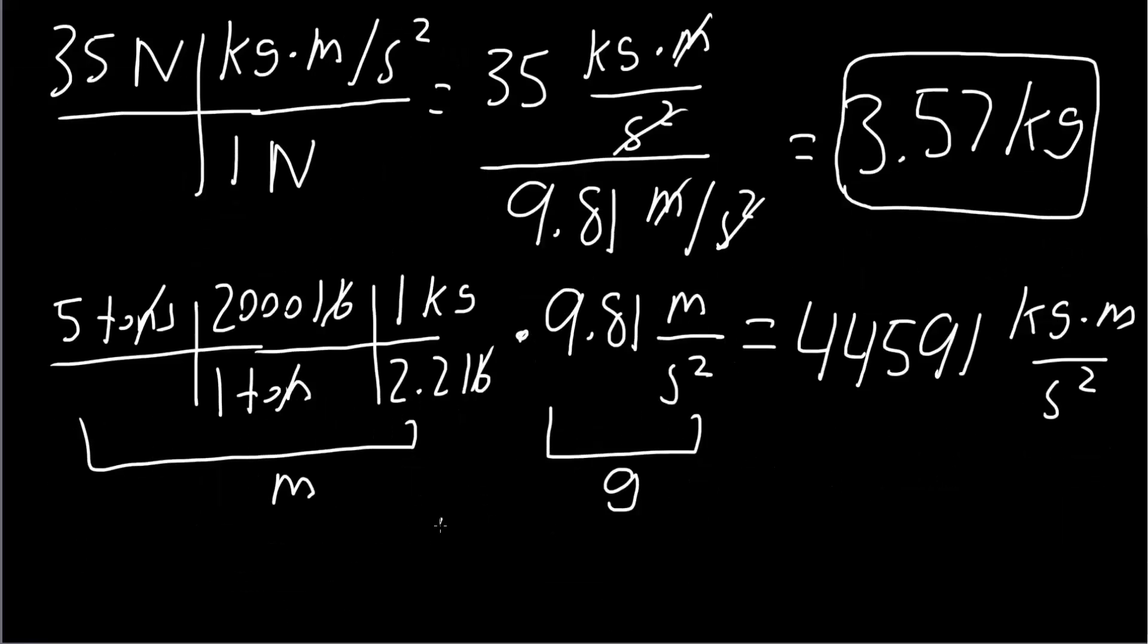So we can say 44,591 kilograms times meter divided by seconds squared. And based on the relationship, we know that 1 kilogram times meter divided by seconds squared is going to be 10 to the 5th dynes. So this would cancel, and this would cancel, and we would be left with dynes.